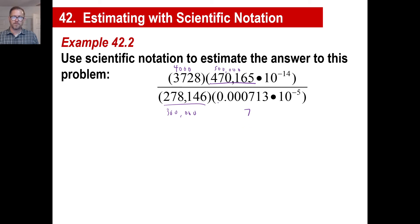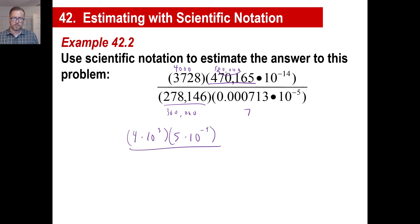Let's take each part individually and fix it. So 4,000 will be 4 times 10 to the third. This will be 500,000 — moving it over 5 times — which means 5 times 10 to the negative 14th plus 5, which is negative 9. This will be 300,000, which is 3 times 10 to the 5th power. And this is a 7; we're moving it over 4 times, so it'll be 7 times 10 to the negative 9.